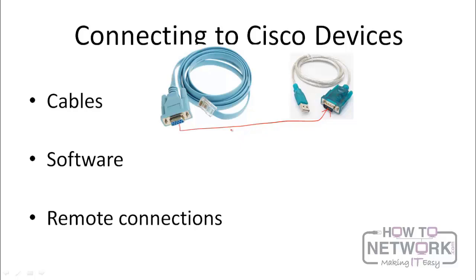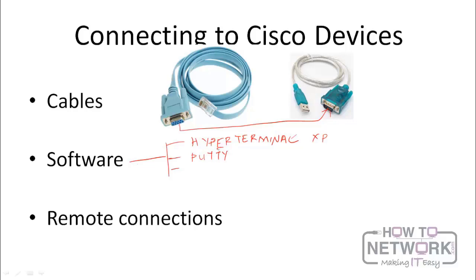So you have connected the cables to your router and connected it into your system — what next? You need software to be able to configure the routers or the switches, and there are many kinds of software you can use. The first one is Hyperterminal, which used to be really popular because it came preloaded on Windows machines up until Windows XP. But from Windows Vista, Windows 7, and Windows 8, Hyperterminal no longer comes directly with Windows, though you can download a private version from the internet. Another software you can use is PuTTY — a small, free software you can download from the internet, and you don't have to install it. Once you download it, you just run the executable file and configure your devices.